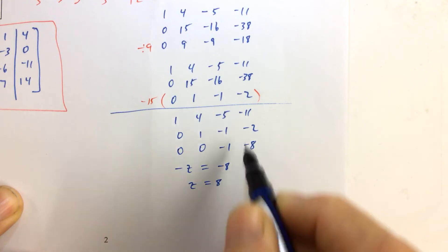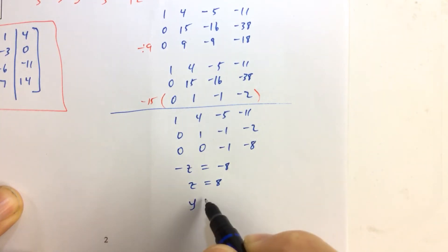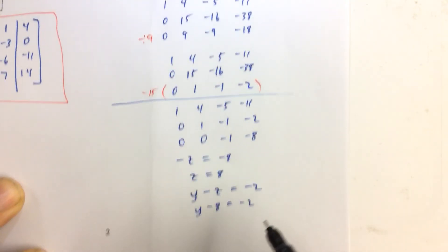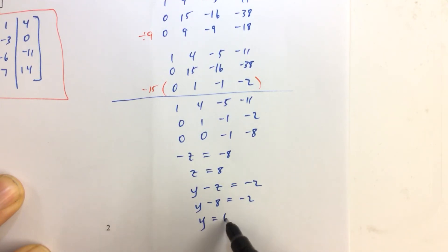So now we're going to put z equals eight into this second equation. We get y minus z equals negative two. Y minus eight equals negative two. And therefore, adding eight to both sides, we get y equals six.